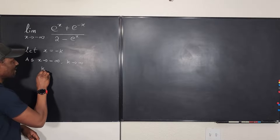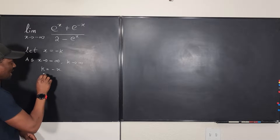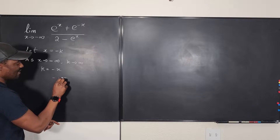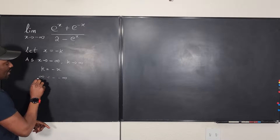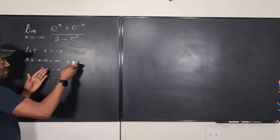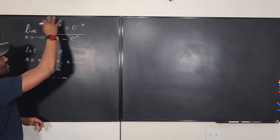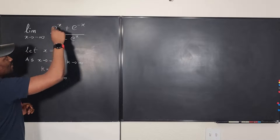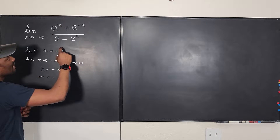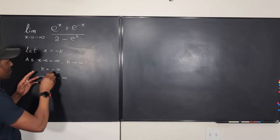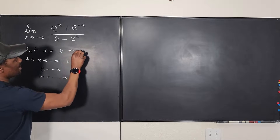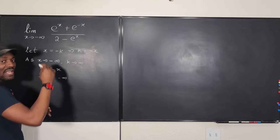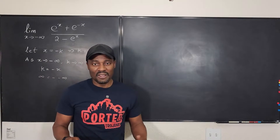Or you can look at it this way: let k be negative x, so that as x goes to negative infinity it's going to be negative negative infinity, and k is going to become infinity. So that's the reasoning behind this, and then we can rewrite this problem and replace x. Anywhere we see x we're going to put negative k; anywhere you see negative x you're going to put k. So which implies k equals negative x. It's good to build this because it helps us simplify the problem better.